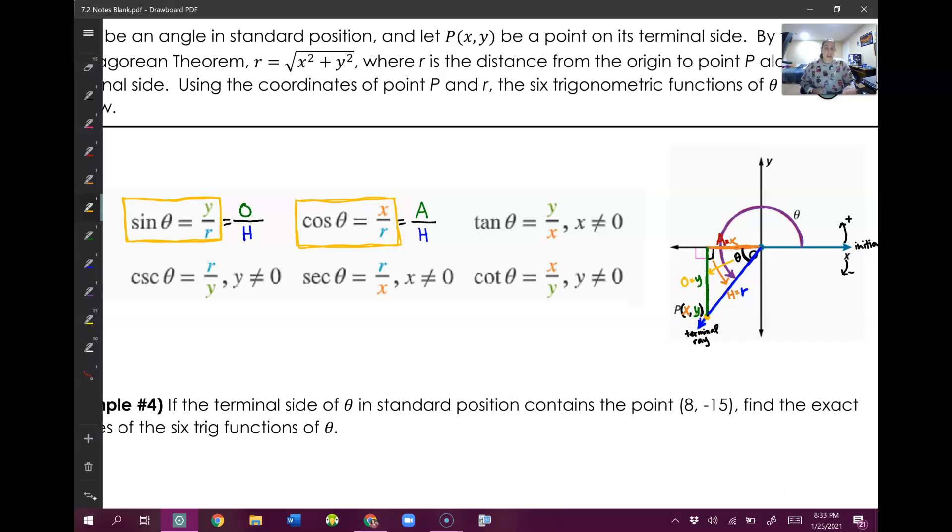Last one, tangent. Now we remember that tangent is SOH CAH TOA, so opposite over adjacent. Well, my opposite side is my Y. My adjacent side is my X. So now tangent isn't just opposite over adjacent, it's also Y over X.